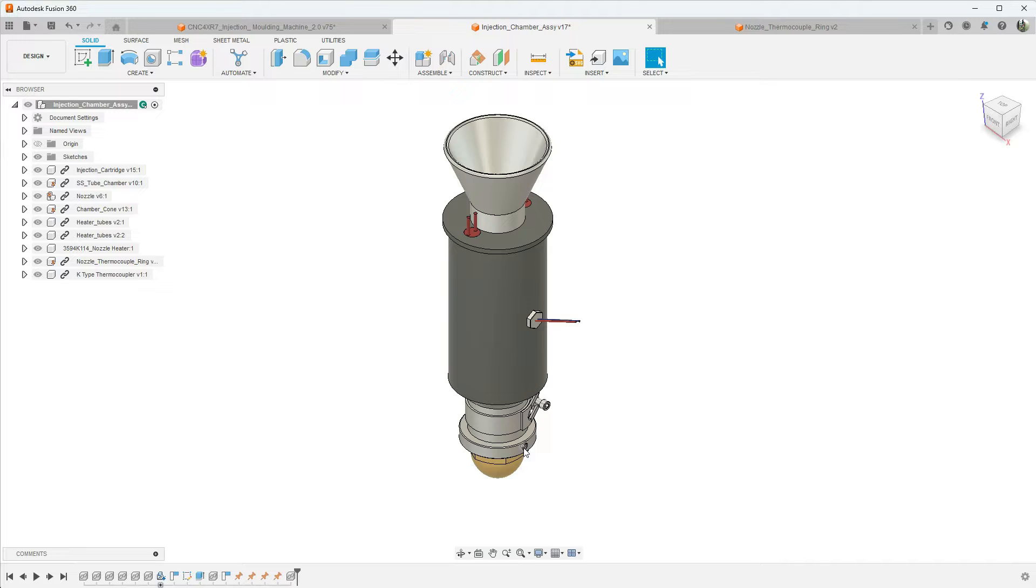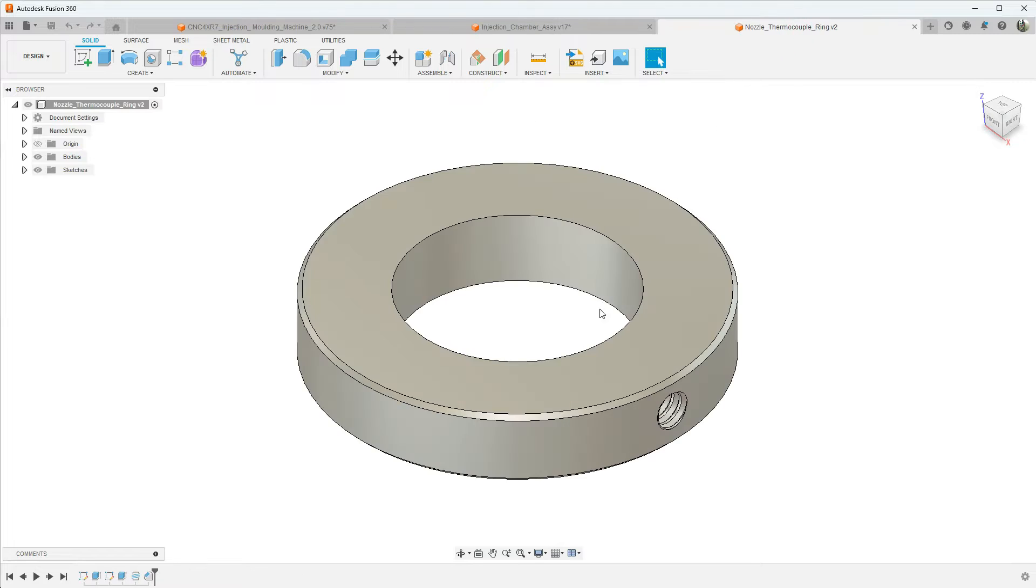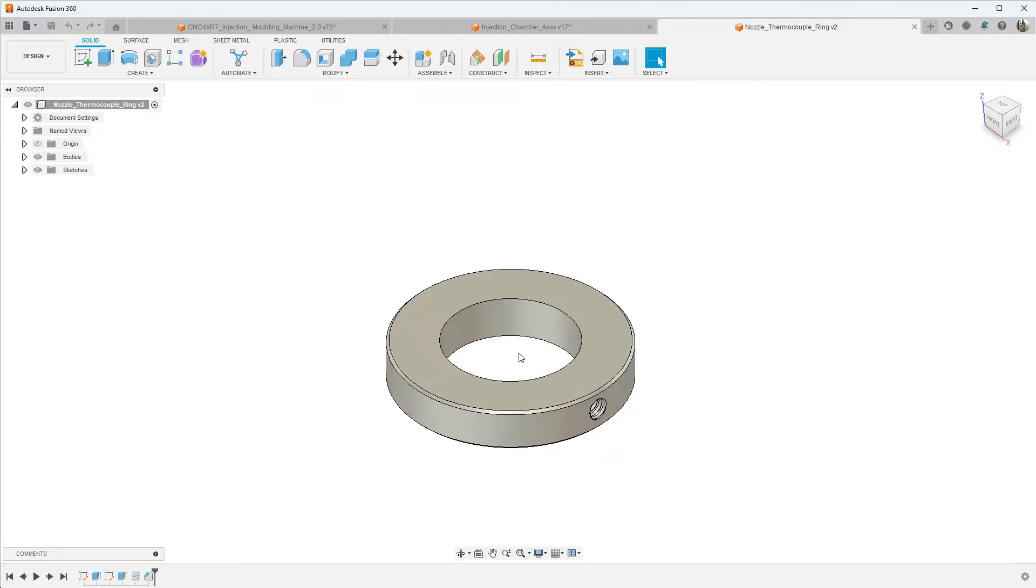It's just a simple ring. There's not really much to it. I'll probably just manually machine this. We've got a one-inch bore here and an inch and three-quarter diameter, and we've just got an M6 thread here for our thermocouple mount.